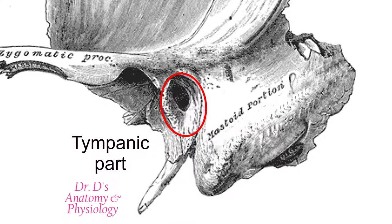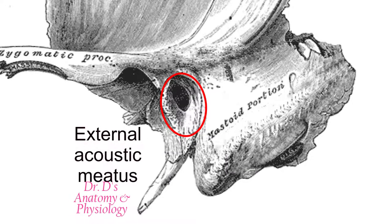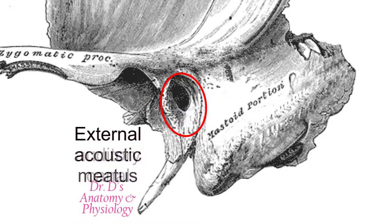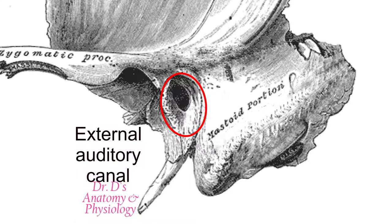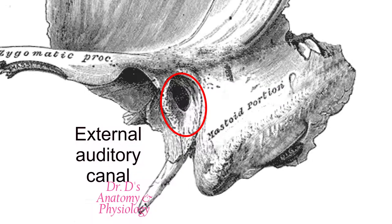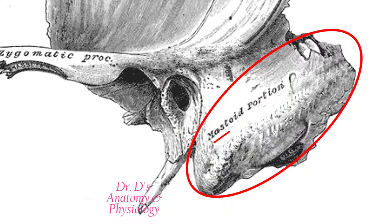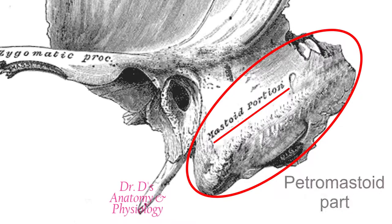Posterior and inferior to this articulation we find the tympanic part. It's called the tympanic part because at maturity it forms the bony wall of the external acoustic meatus, which can also be referred to as the external auditory canal. This is associated with our sense of hearing, and this part will be looked at in greater detail when we examine the special senses.